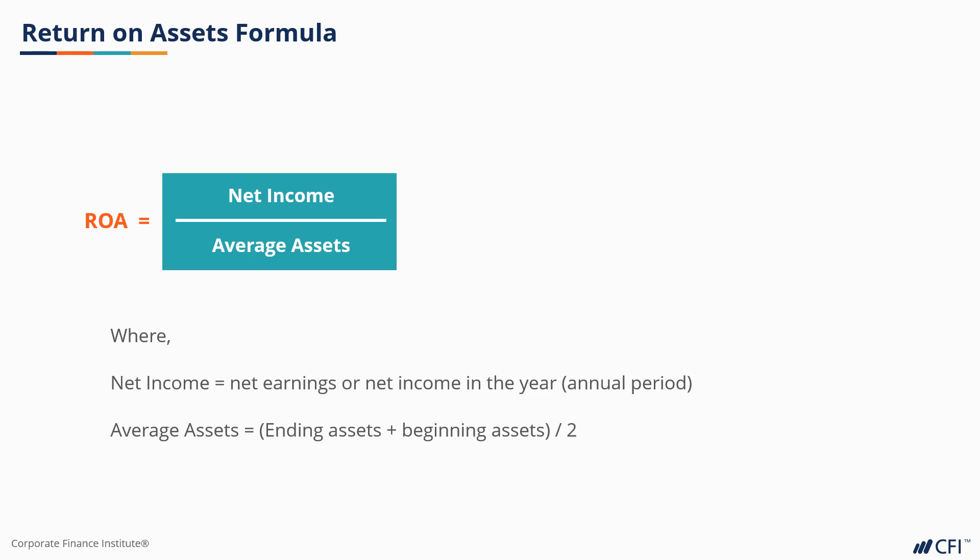The average assets are the ending assets minus beginning assets divided by 2. Sometimes analysts will take net income and divide it by the end of period assets.